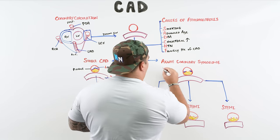Now for diagnosis: a patient presents with anginal chest pain. The first test is an ECG — not troponin. Add cardiac biomarkers like troponin and CK-MB, but ECG is first. If the ECG is normal and troponin is negative, this supports stress-induced ischemia — likely stable angina. If there are T-wave inversions or ST depressions without ST elevation, you're thinking ACS: negative troponin means unstable angina; positive troponin means NSTEMI.